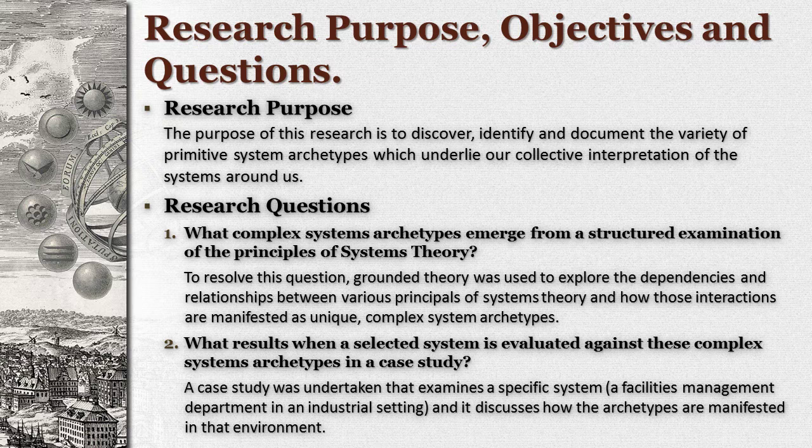By examining the classification systems and archetypes currently associated with system theory, we have identified a number of limitations that can be addressed by this research. Therefore, the purpose of this research is to discover, identify, and document a collection of primitive system archetypes which define how we interpret the systems around us. Following the Jungian definition, the system archetypes will be primitive, underlying imagery that recurs across both time and cultural boundaries and has a similar meaning everywhere it's seen. The research purpose is addressed through two research questions: first, what complex system archetypes emerge from a structured examination of the principles of systems theory? And secondly, what happens when these archetypes are applied to a system in a case study?